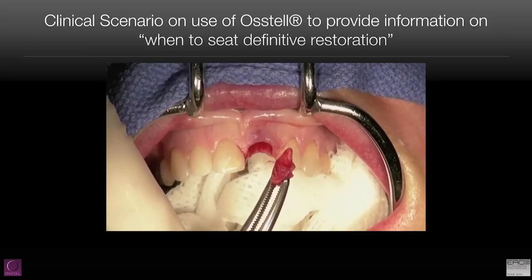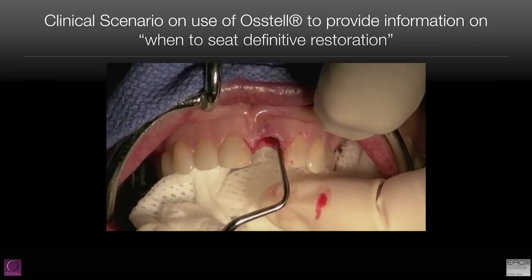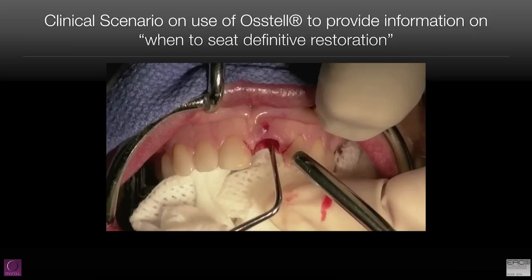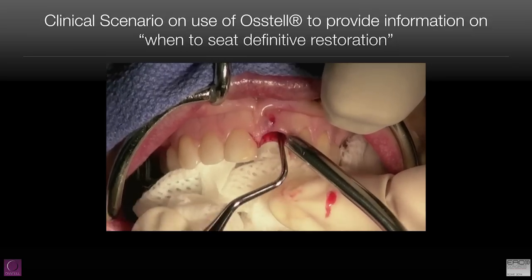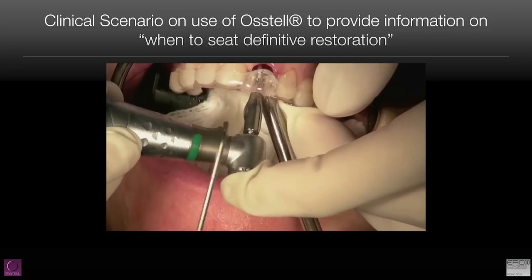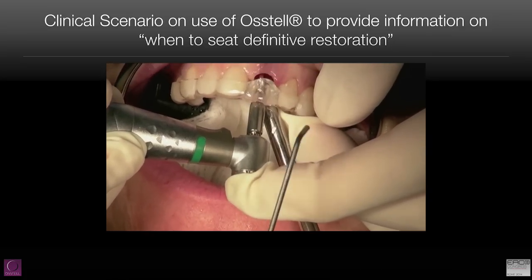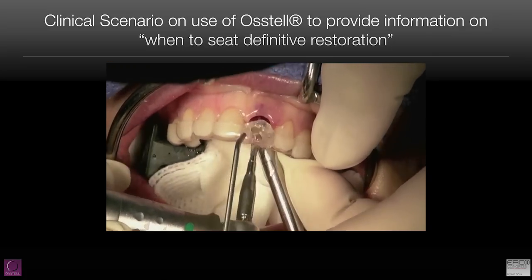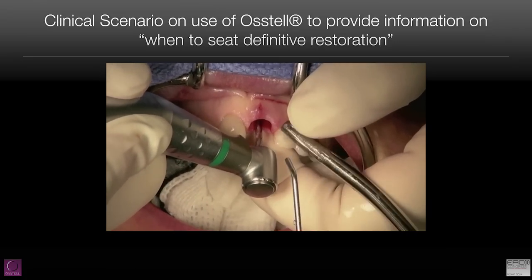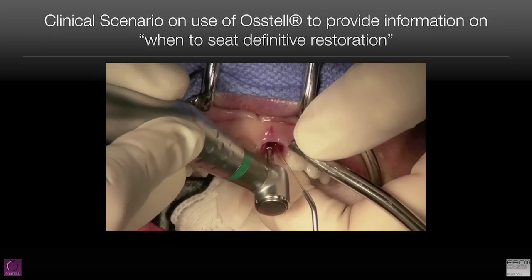As you can see, we tried to perform atraumatic extraction with all of our cases — sometimes it's possible, sometimes it's not. For me, to immediately place the implant, I must maintain that solid bone that we find on the palatal aspect of the socket. It doesn't matter what happens on the labial aspect as far as implant stability is concerned; it does matter as far as soft tissue.